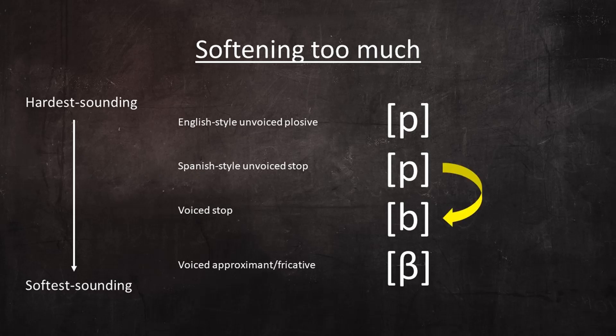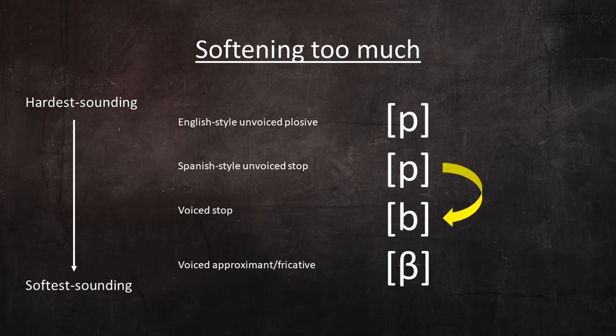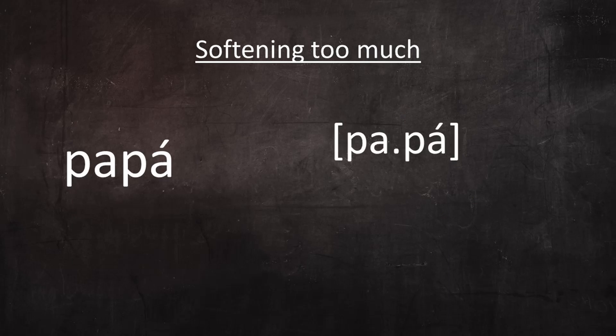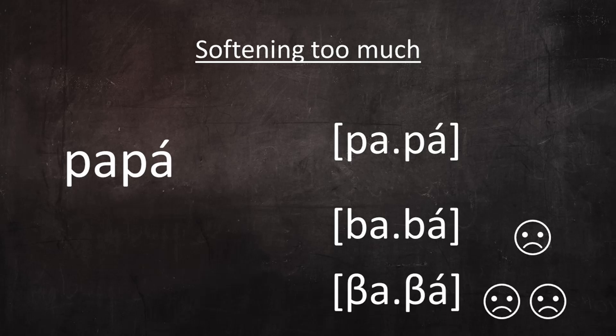Another mistake a student might make is voicing unvoiced stops. We can use the word PAPA as an example. Obviously, in Spanish the P is never voiced, PAPA, but a student who's trying too hard might voice it and pronounce it like a B. So instead of PAPA, they might say something like PAPA. And worse still, if the student generally pronounces B's as approximant, he might go so far as to pronounce this word like BABA. So out of the fear of saying PAPA, he goes from PAPA to BABA and even BABA, which is very, very wrong.